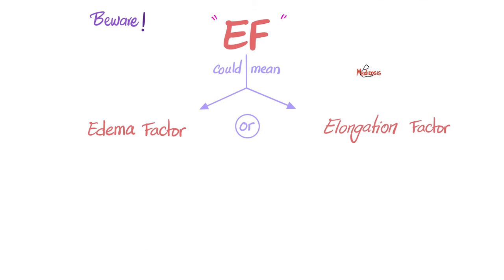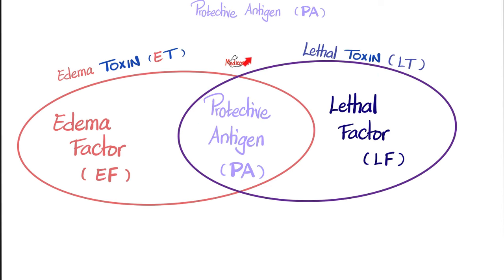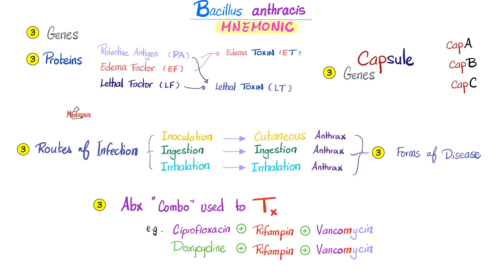When you see the abbreviation EF in microbiology, it could mean edema factor or it could mean elongation factor. They are not the same, so pay attention. To belabor the point — because it's worth belaboring — protective antigen is the middleman. Protective antigen plus edema factor equals edema toxin. Protective antigen plus lethal factor equals lethal toxin.